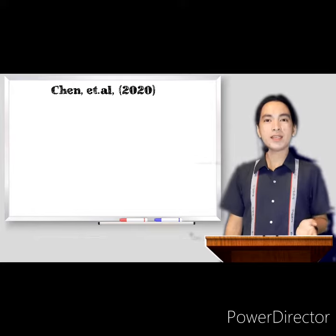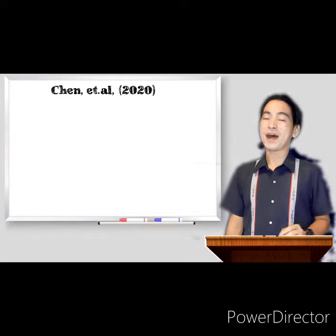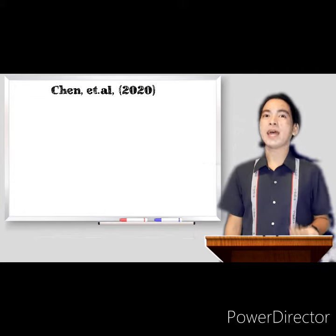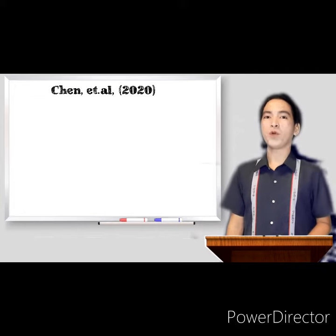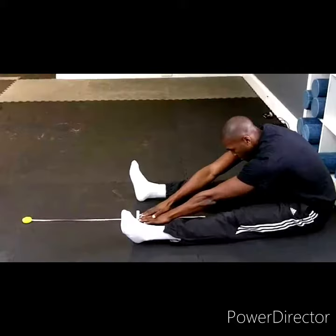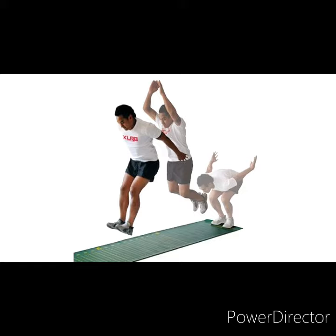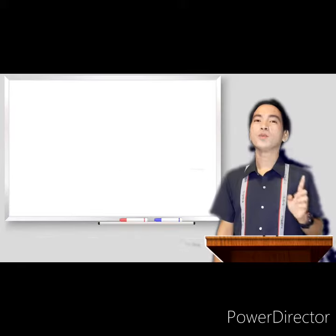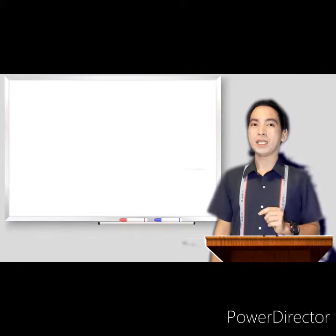Shen et al. 2020 found out that overweight and obese students had poorer performance in sit and reach, standing long jump, pull up, and sit up. To monitor your Body Mass Index,